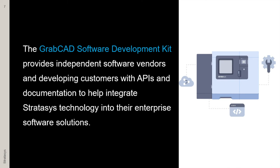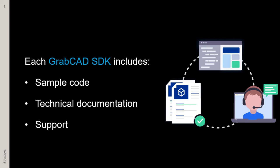The GrabCAD SDK provides independent software vendors and developing customers with APIs and documentation to help integrate Stratasys technology into their enterprise software solutions. Each GrabCAD SDK includes sample code, technical documentation, and support to help you integrate Stratasys 3D printing solutions with your commercial and proprietary software.